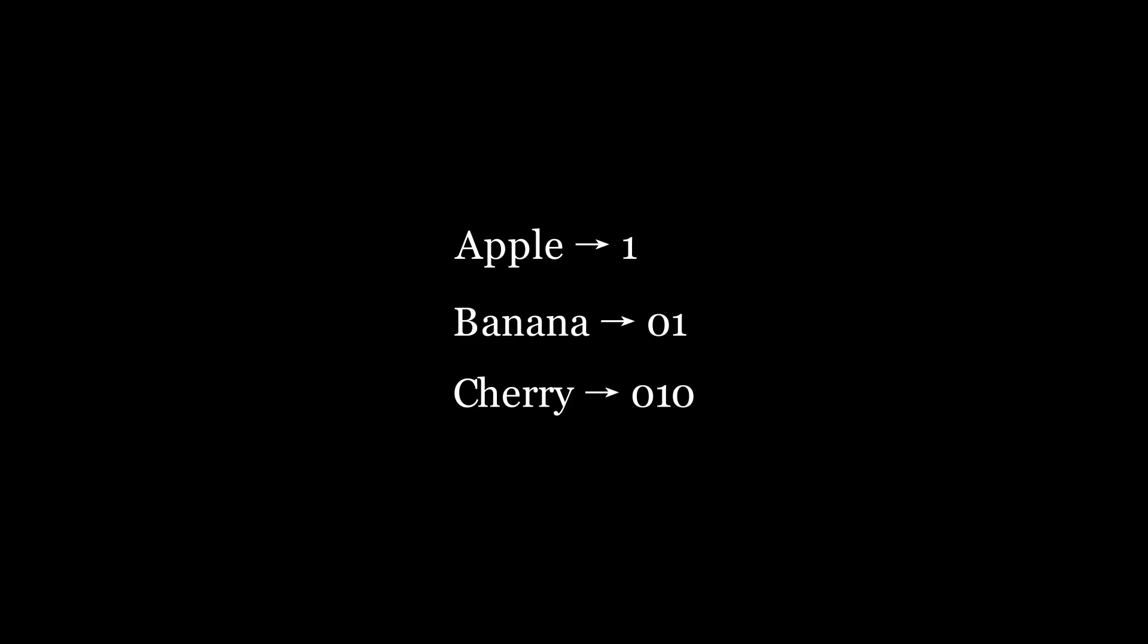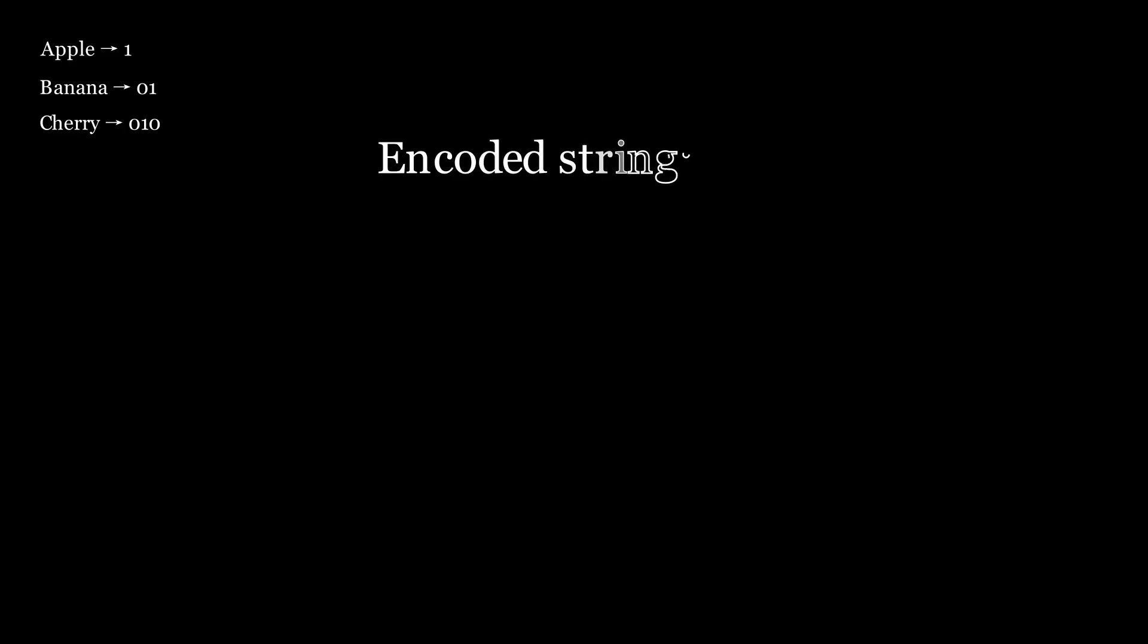Let us create a sample encoded string with the code words 1, 0, 1 and 0, 1, 0 for apple, banana and cherry. For the encoded string 0, 1, 1 it is easy for us to split it and get the code words. But for the encoded string 0, 1, 0, 1 there is ambiguity.